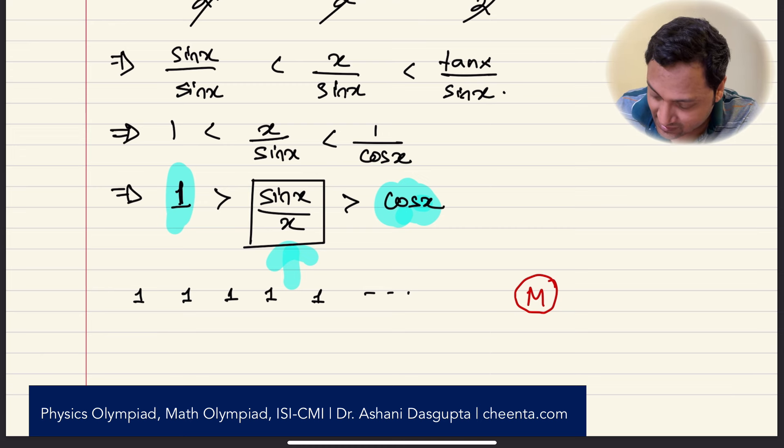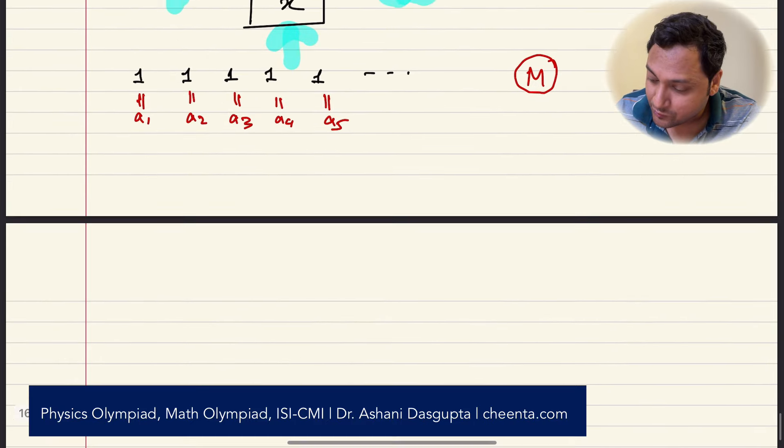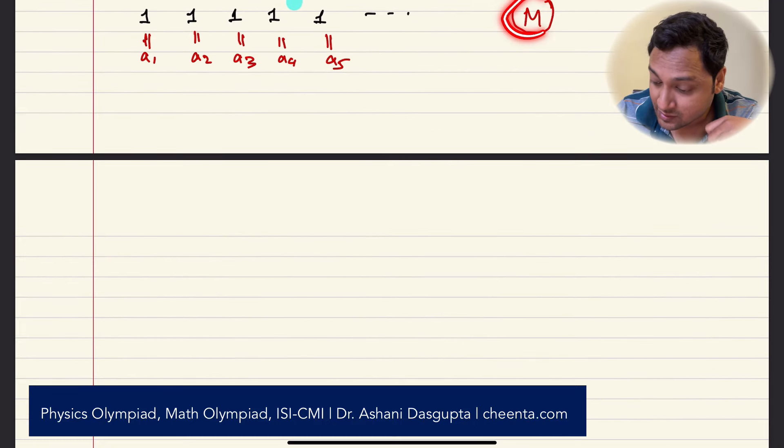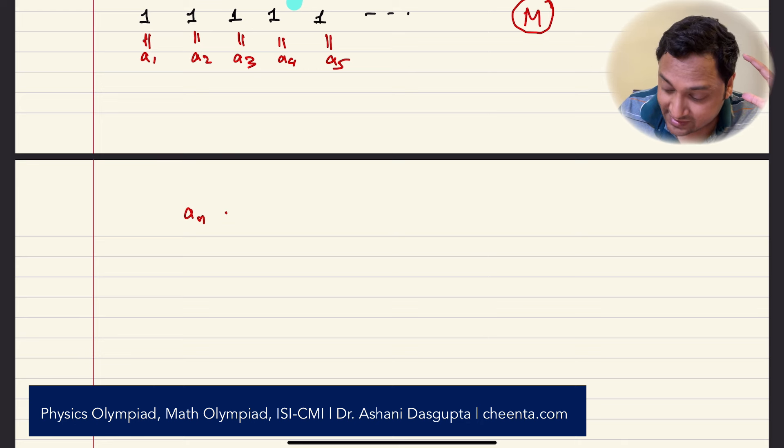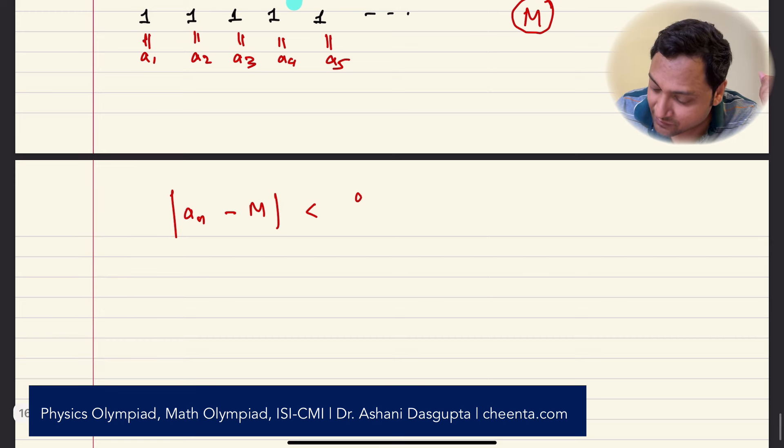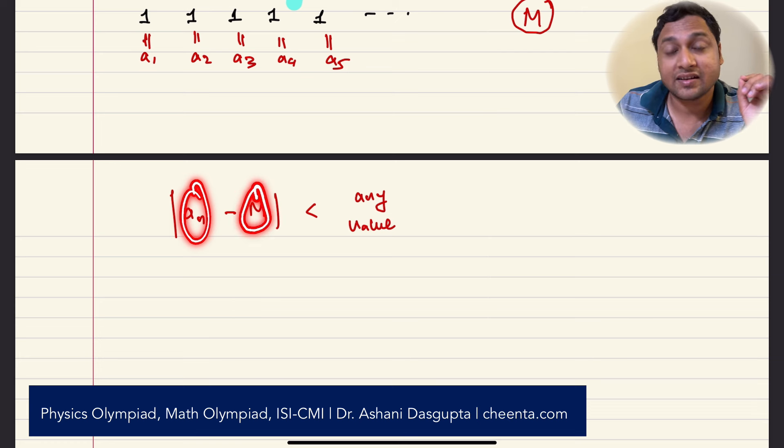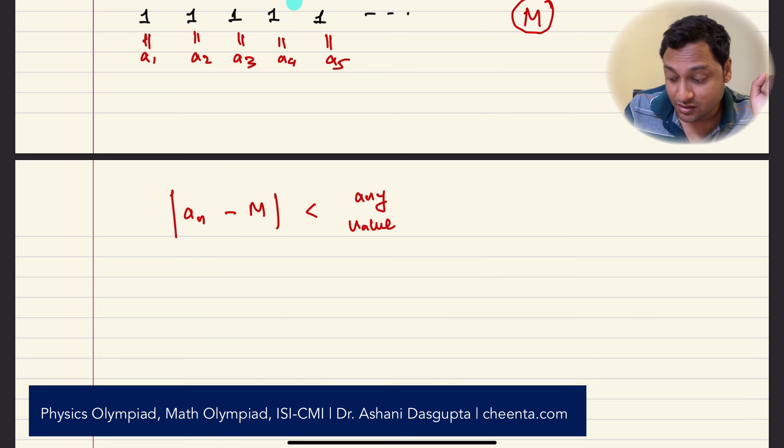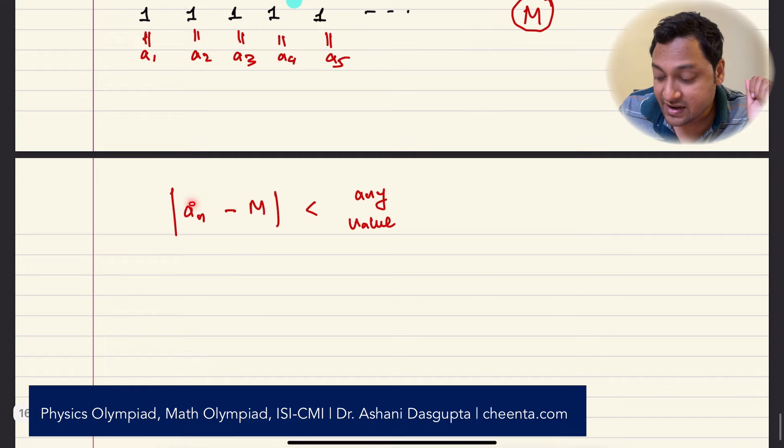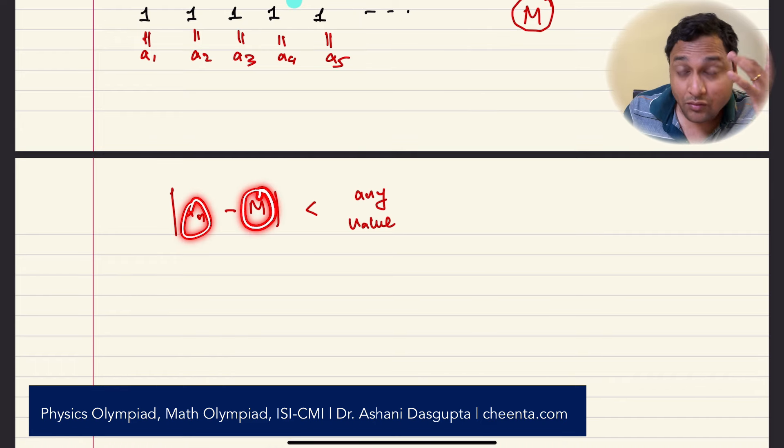So this is the sequence elements, A1, A2, A3, and so on. A4, A5. We want to find out a number M such that AN, that is any term of the sequence, minus M can be made smaller than any value. Any value. So you can bring the sequence term as close to M as you want. You don't want to actually, you know, you don't need to bring AN to be equal to M. That's not needed.